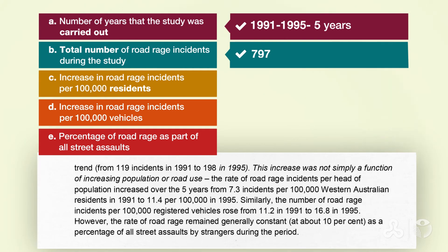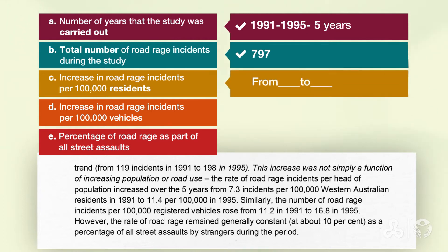Let's look at C — the increase of road rage incidents per 100,000 residents. Now notice the words 'from' and 'to'. This gives us a range, meaning we need to show the increase in the number of road rage incidents per resident. And of course you found the numbers: from 7.3 to 11.4.